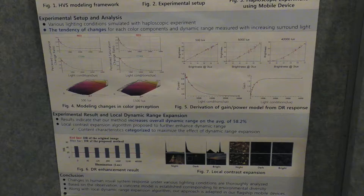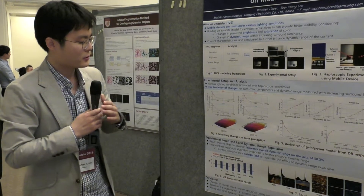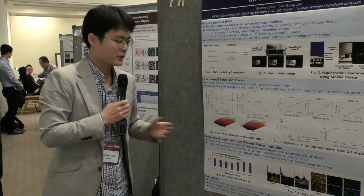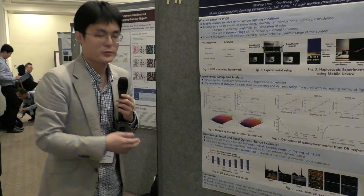From these data, we derived a gain power model to compensate for the light dynamic range loss with the change of surrounding light. We also used a local dynamic range expansion algorithm to compensate for those losses.